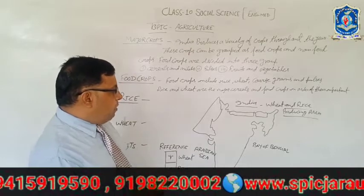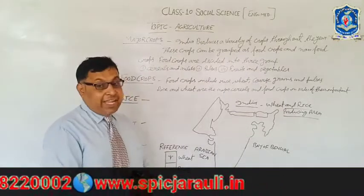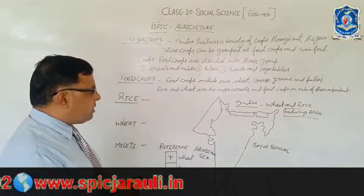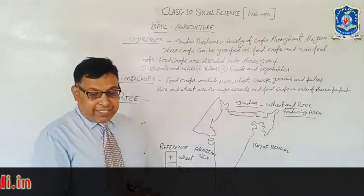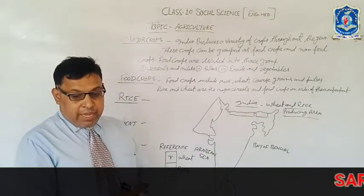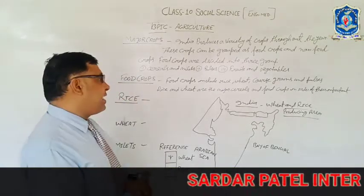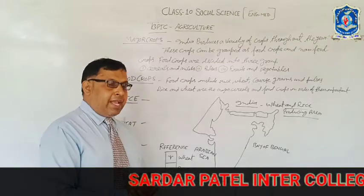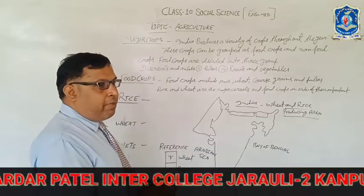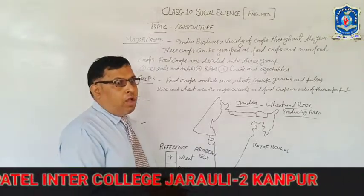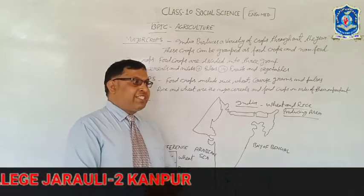खासकर जो समुद्र से लगे क्षेत्र हैं और मध्य में जहाँ पर सिंचाई की व्यवस्था है, वहाँ पर राइस की फसल की जाती है। महत्त्वपूर्ण राइस उत्पादक राज्यों में वेस्ट बंगाल है। जैसा कि आपको मालूम है, भारत में सबसे ज़्यादा चावल पश्चिम बंगाल में होता है क्योंकि वहाँ पूरे वर्ष राइस की फसल की जाती है।